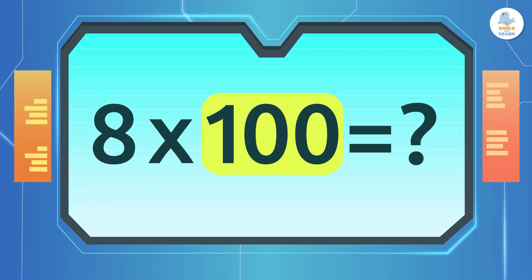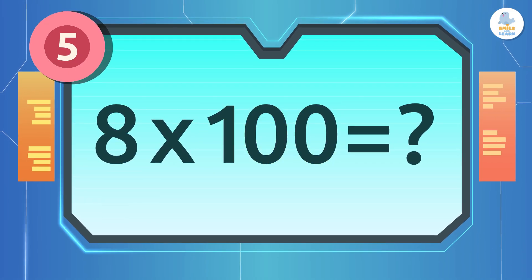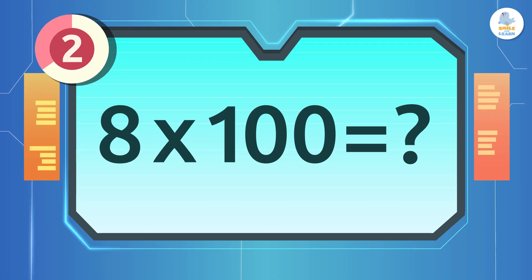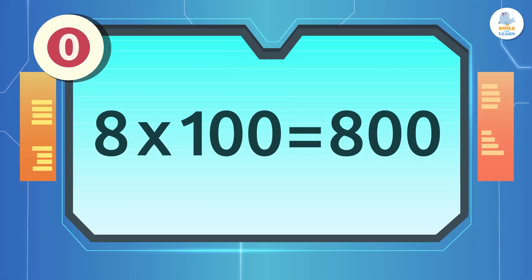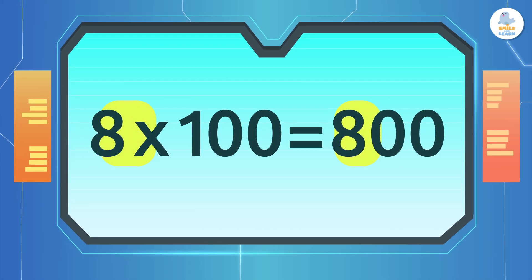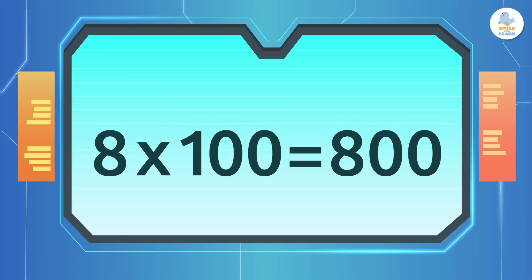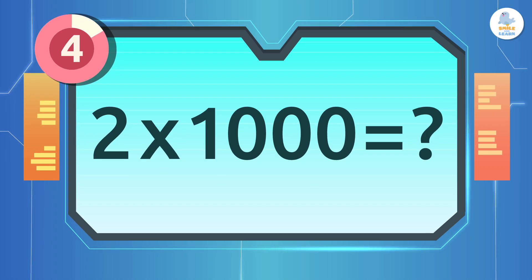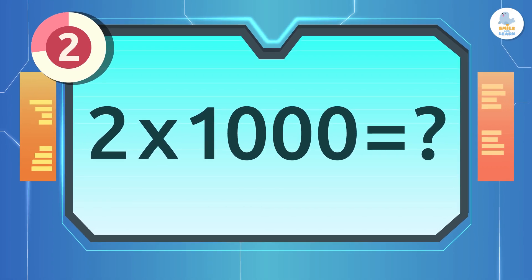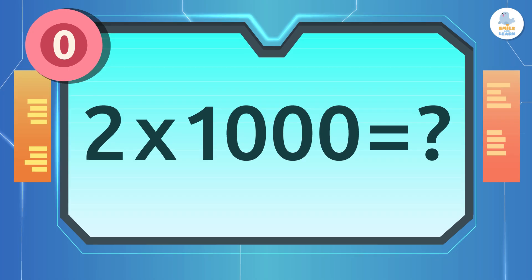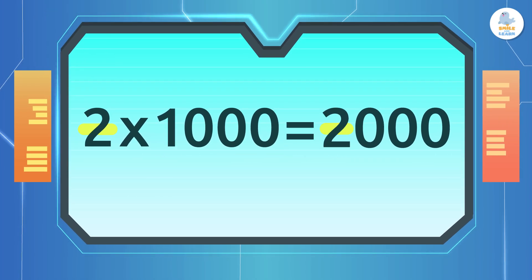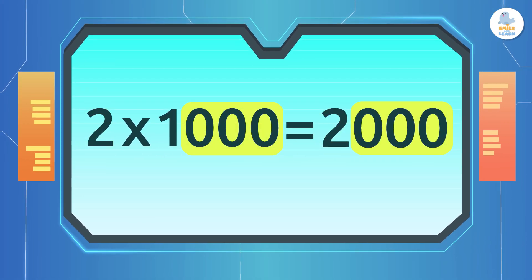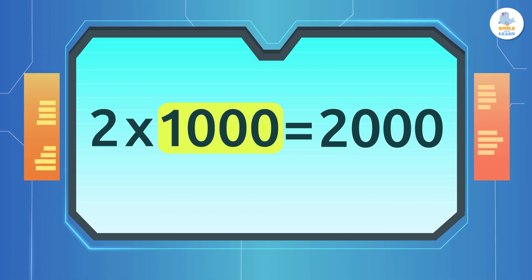What is eight times one hundred? Very good — eight hundred! First we put the eight and add two zeros because we are multiplying by one hundred. What is two times one thousand? Exactly — two thousand! We put the two first and add three zeros because we are multiplying by one thousand.